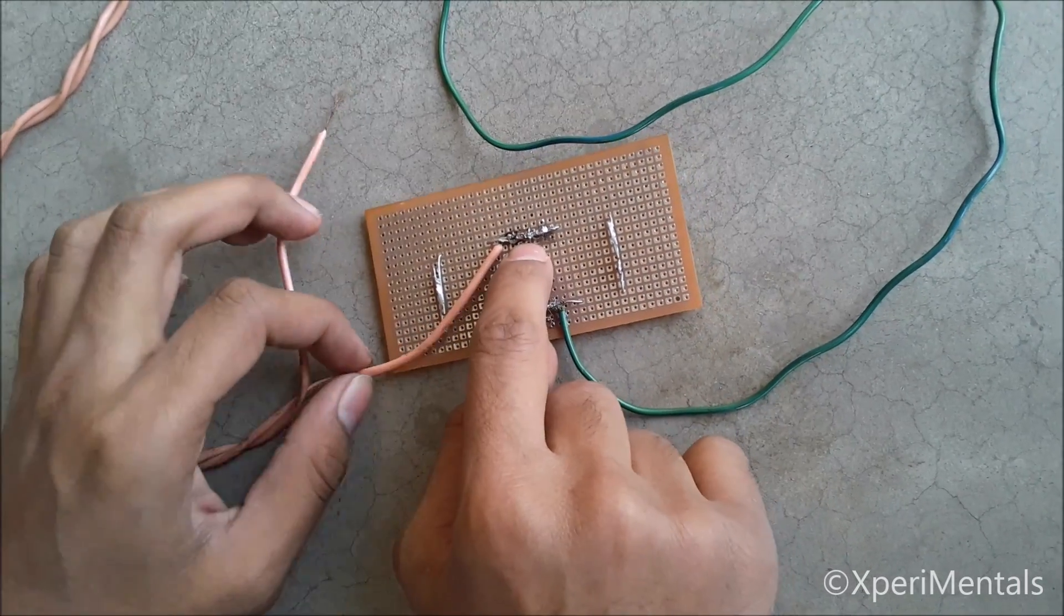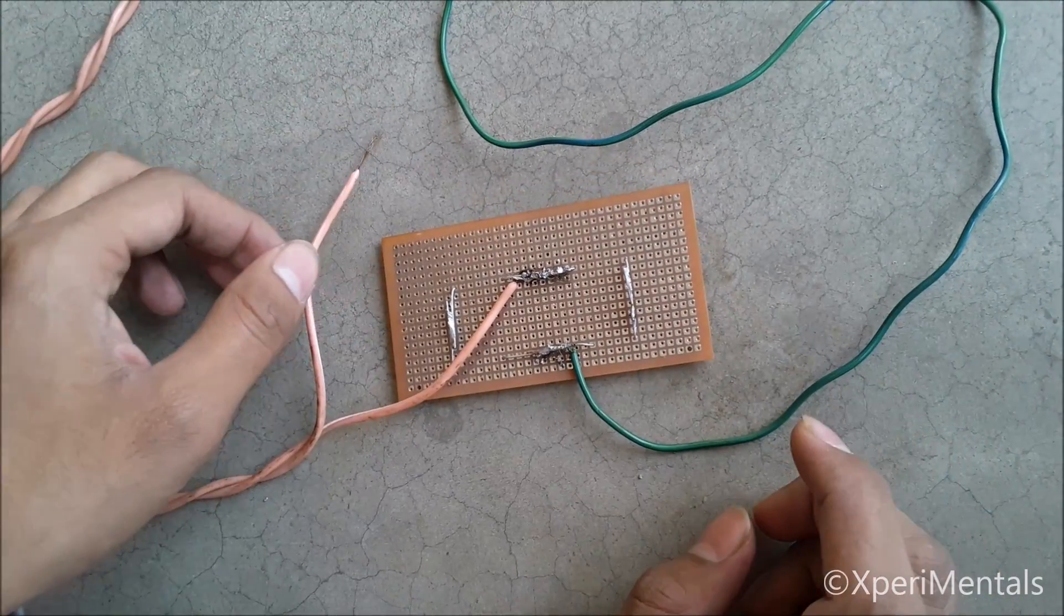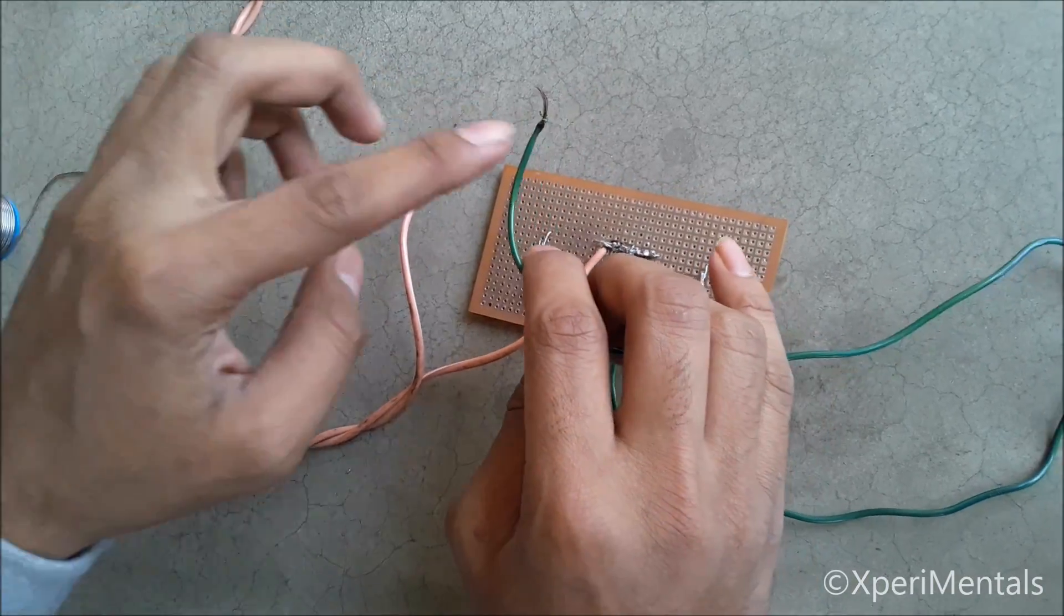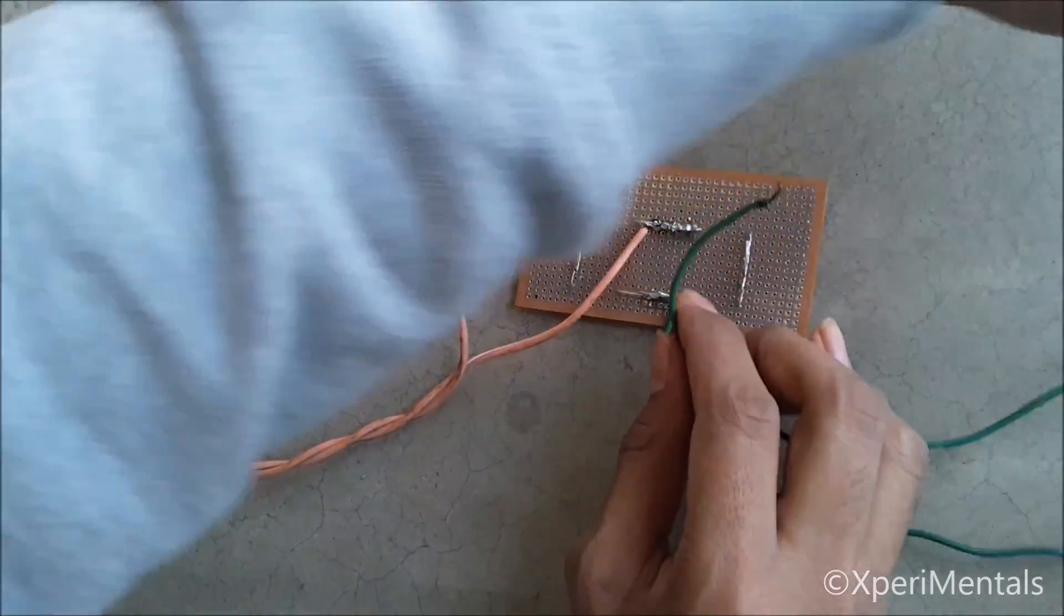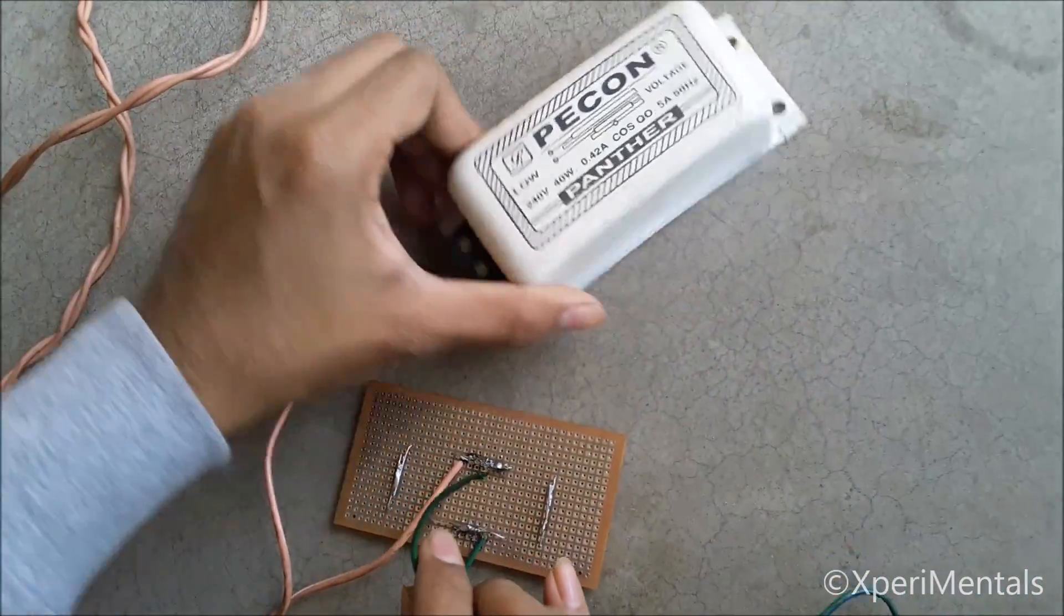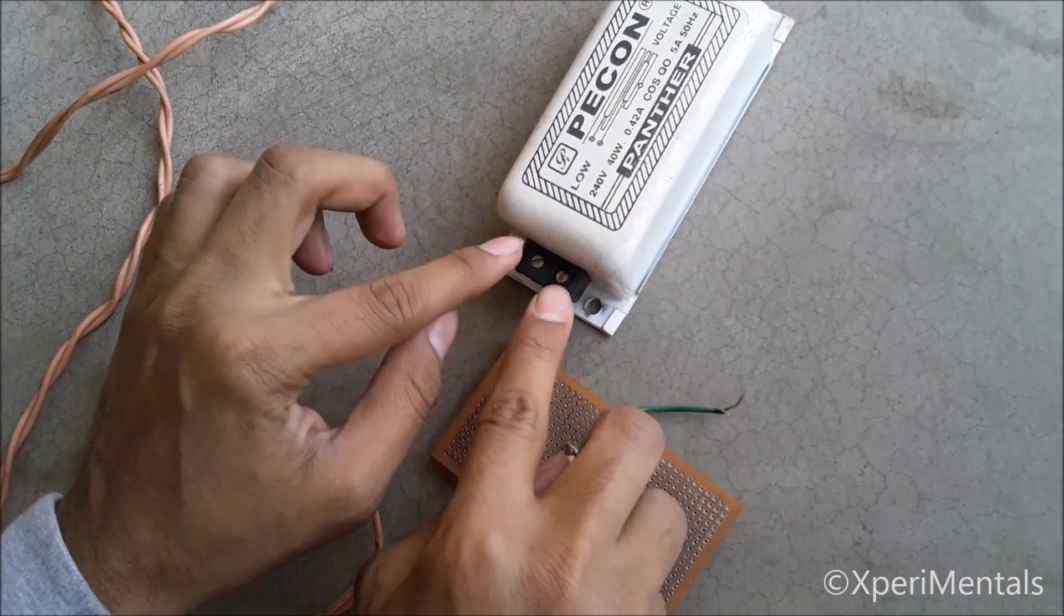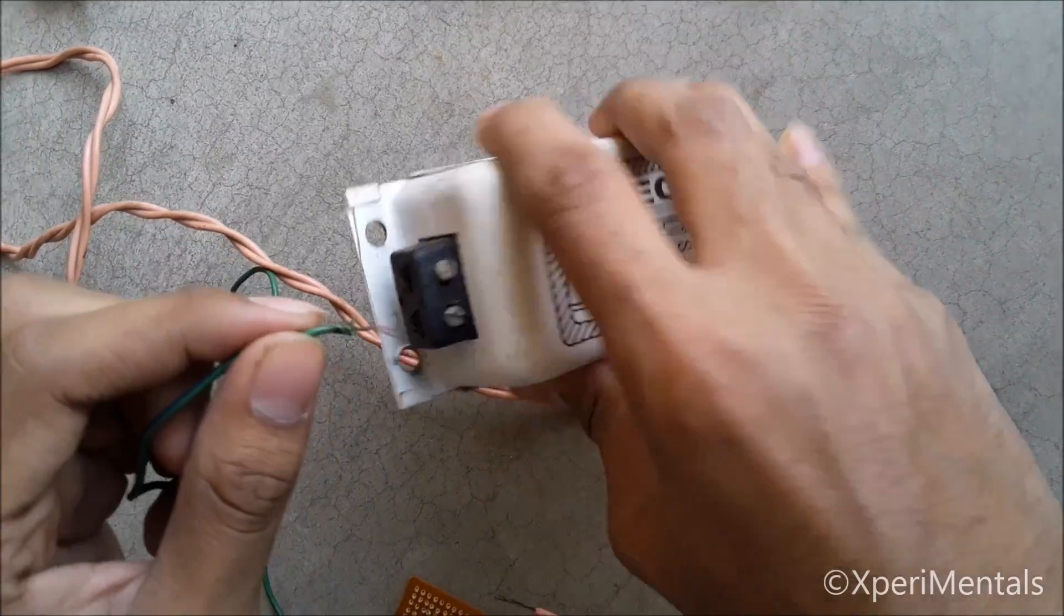We are now heading towards the next step. We have to connect these two wires with the choke. We are going to connect these wires with these two points. I am connecting it.